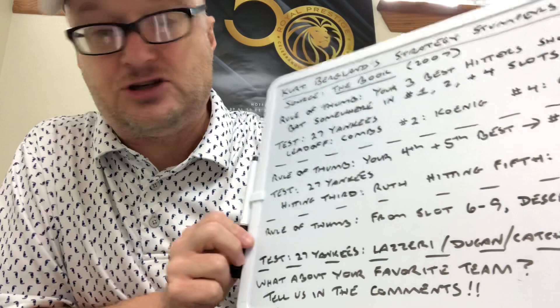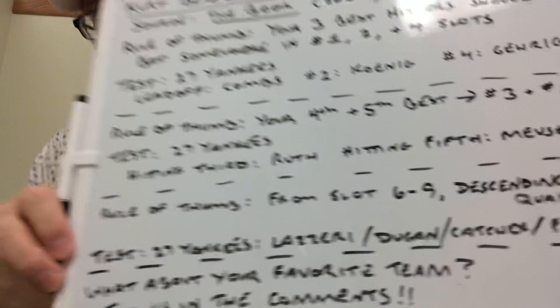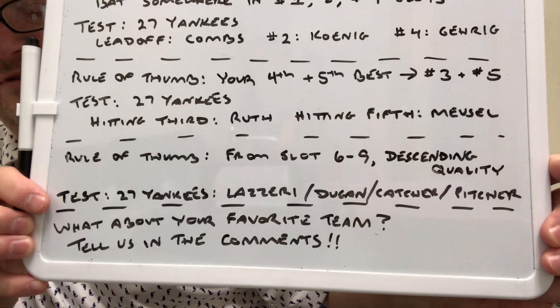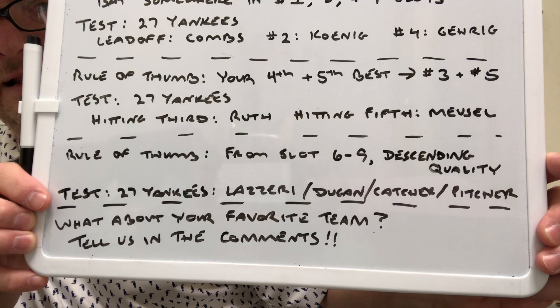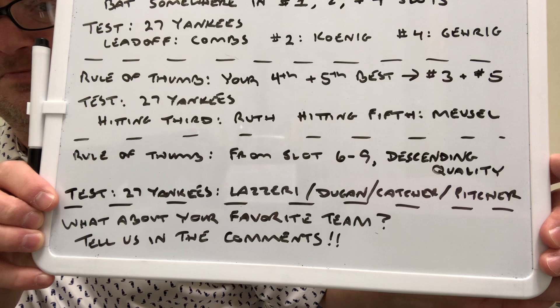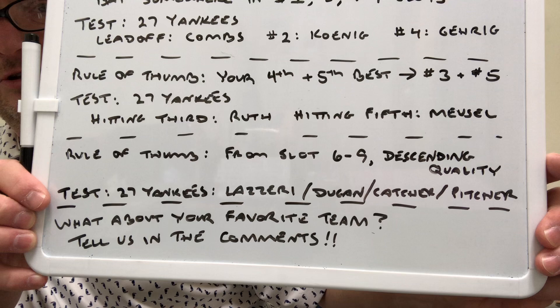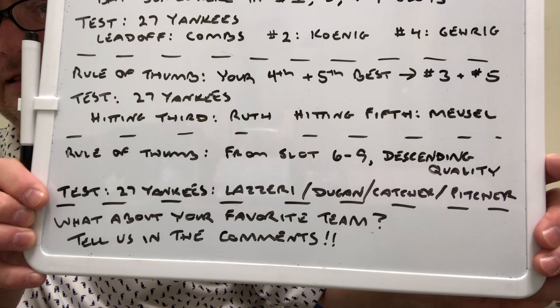Rule of thumb number three is that from slots six through nine, you put your hitters in descending quality order — each successive spot getting the next worst hitter. For the 1927 Yankees, their sixth hitter most often was Tony Lazzeri, their seventh hitter was third baseman Joe Dugan, their eighth was the catcher, and their ninth was the pitcher.